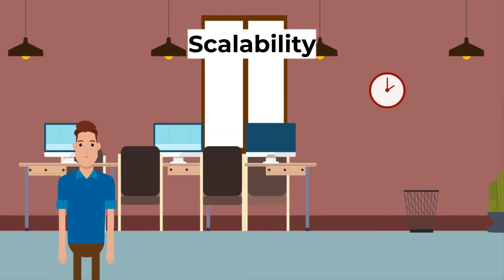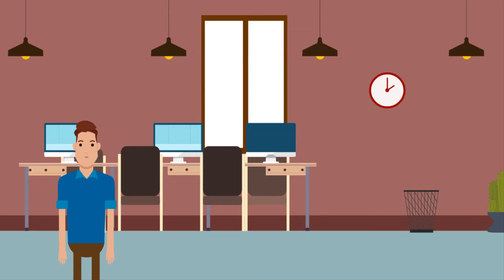2. Scalability. It's the reason for increasing returns to scale. Machines can work together in a way people, or groups of people, cannot. Bigger machines produce more; bigger men do not necessarily. You can build a billion machines and they will produce. When you build a billion people, you have a Malthusian disaster.